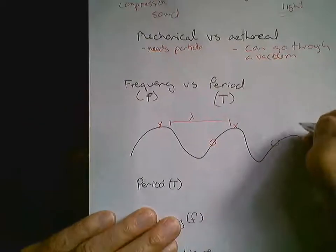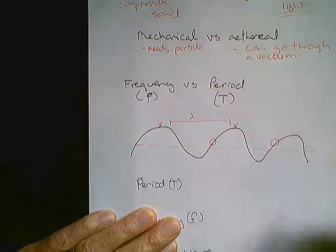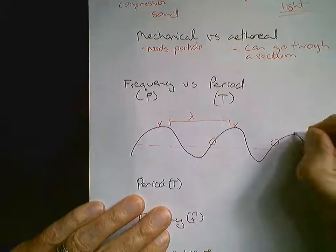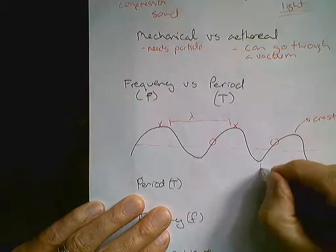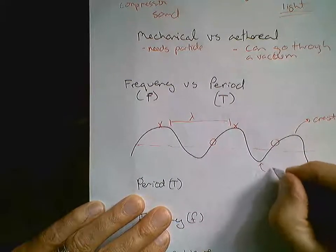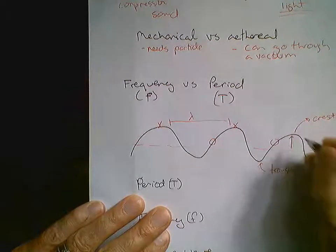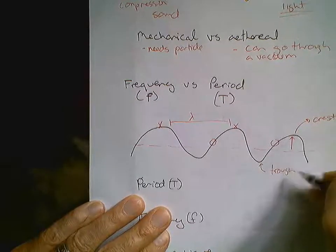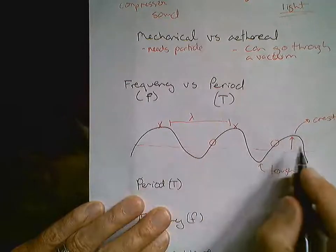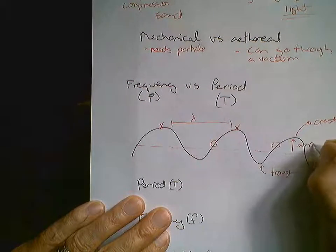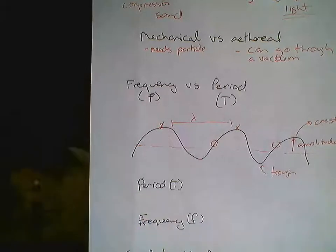While we're on this topic, we can talk about a few other parts of a wave. We can talk about a crest, which is the top. We can talk about the trough, which is the bottom of the wave. From the middle of the wave up — not from the bottom up, but from the middle up — is called the amplitude.